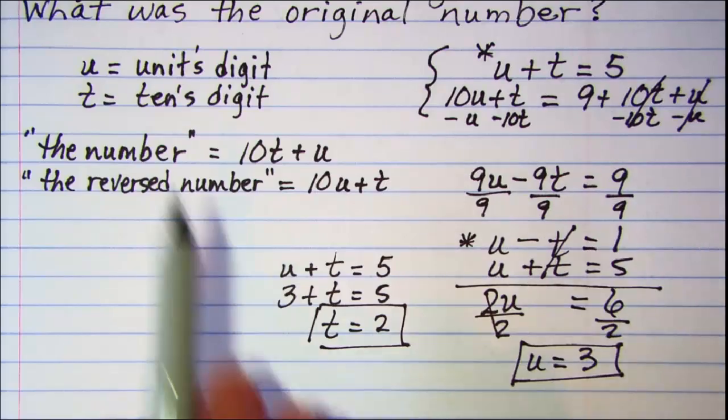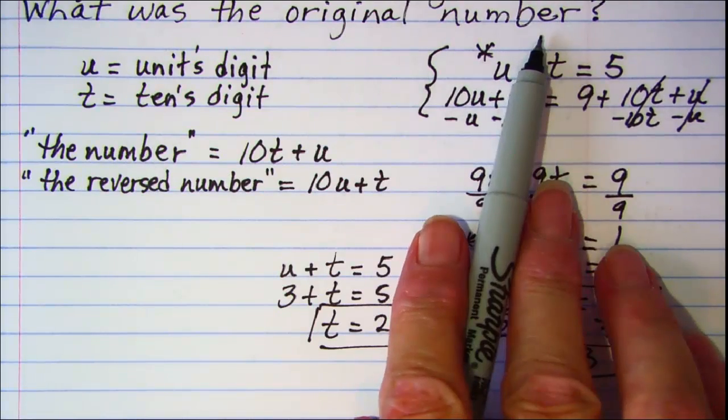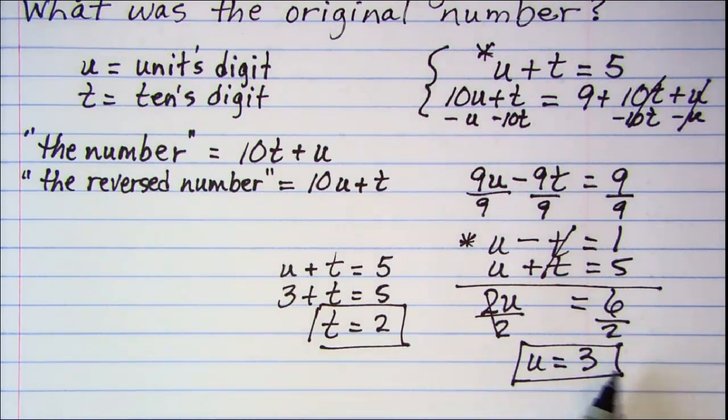Now, the question says what was the original number? So, we don't want to give just these values for our variables. We want the 2 to be in the tens place and the 3 to be in the units place. So, my original number was 23.